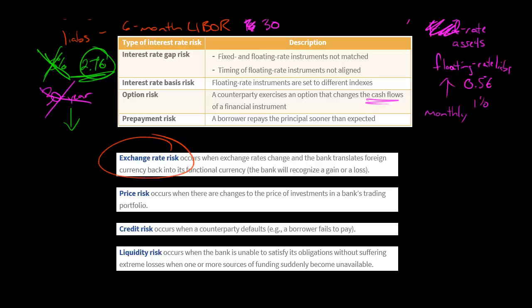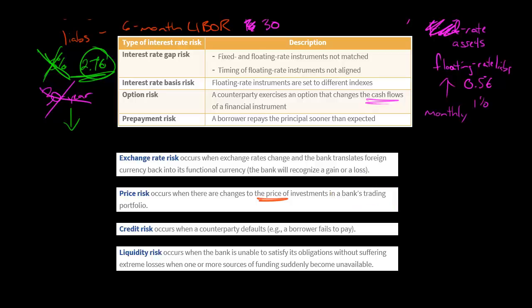There are other risks the bank has as well. Exchange rate risk: if there's a change in the value of, say, the euro-to-yen or euro-to-dollar ratio, when the bank translates their foreign currency back into their home currency, there could be a gain or a loss. Price risk is simply when the bank has investments — maybe an equity investment in a company like Microsoft — and there's a change in the price of that investment in the bank's trading portfolio, which can affect the bank adversely.